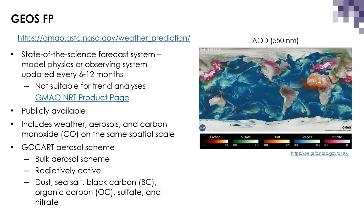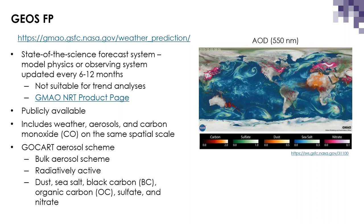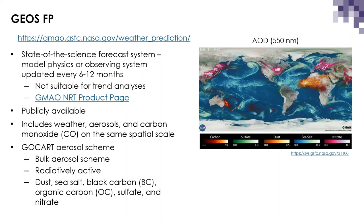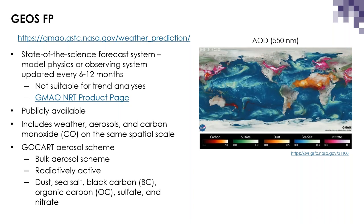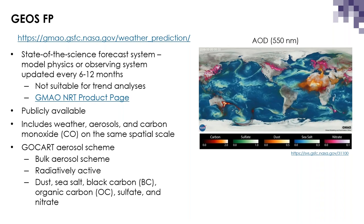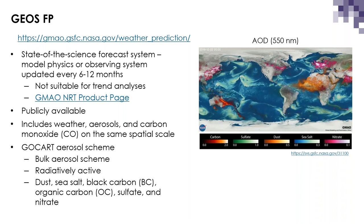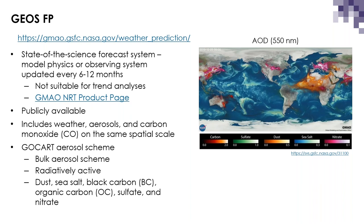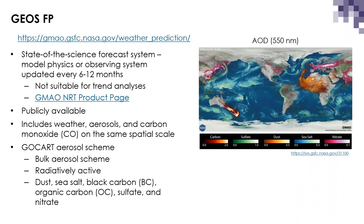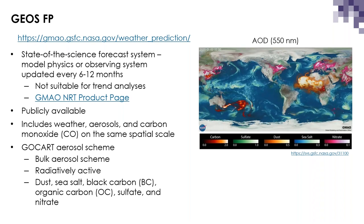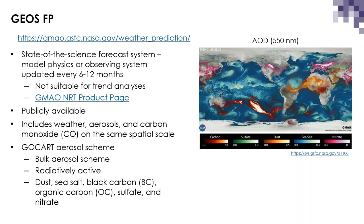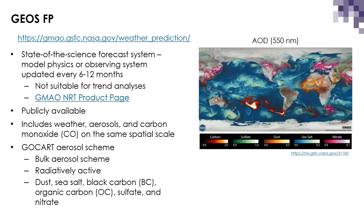The GMAO near real-time product webpage has details and dates for the latest model updates. Aerosols in GEOS FP are simulated with the Goddard Chemistry Aerosol Radiation and Transport Model, or GOCART — a bulk aerosol scheme that simulates dust, sea salt, black and organic carbon, sulfate, and nitrate. A future version of GOCART will also include a brown carbon species.